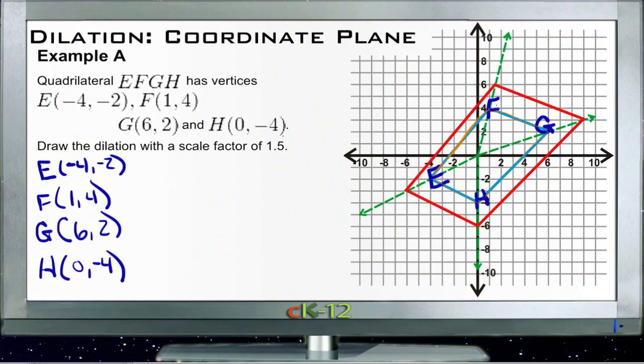And each of those vertices I want to label. What it asks us to do is dilate that figure with a scale factor of 1.5, so we need to take each of the coordinates, again assuming that our center is the origin right here, and then multiply each of the coordinates of each point by 1.5.